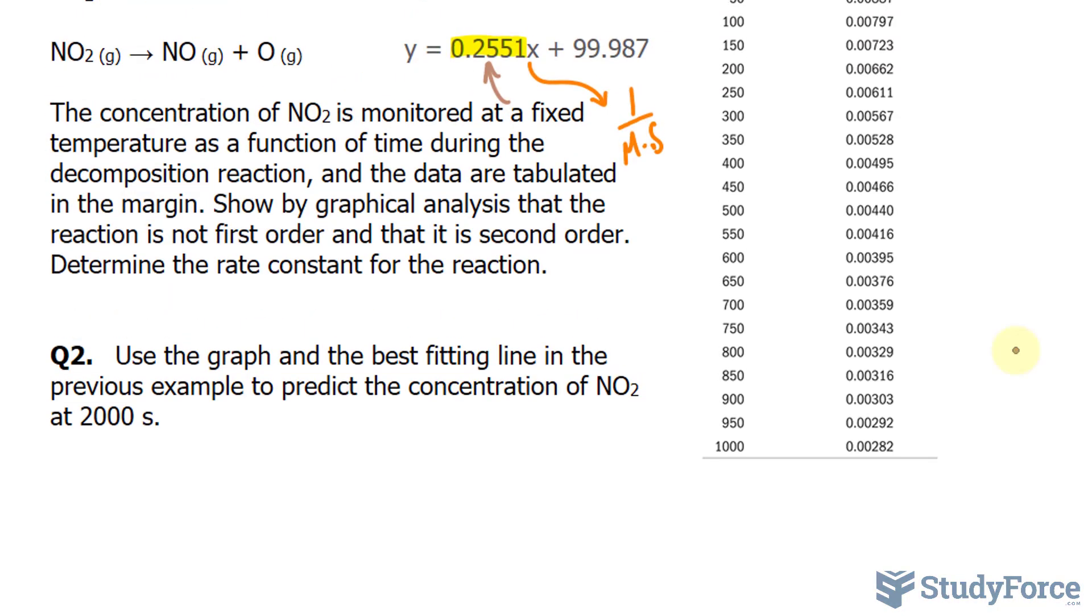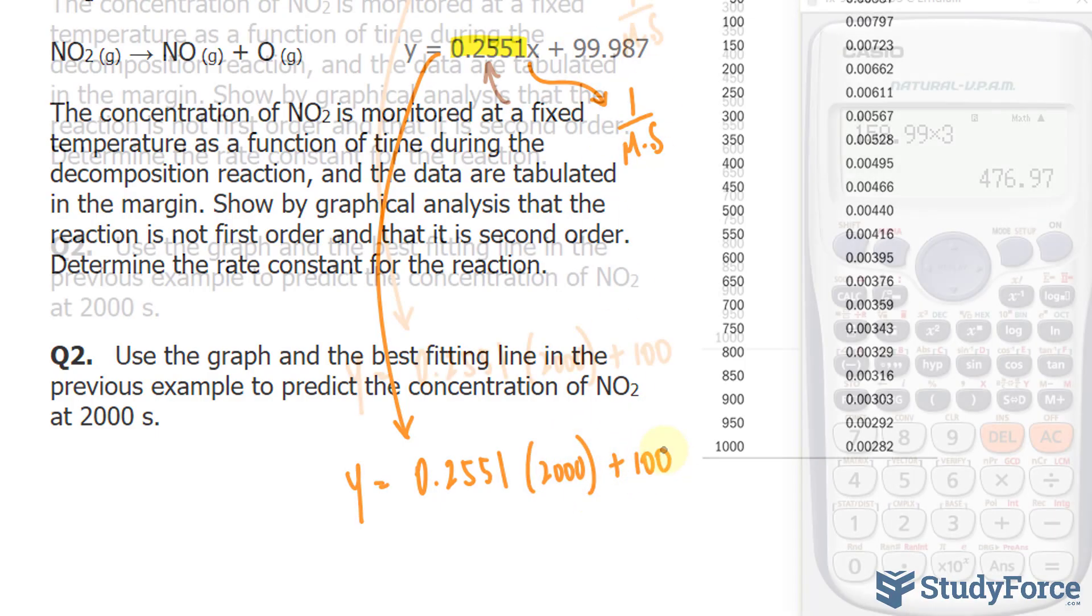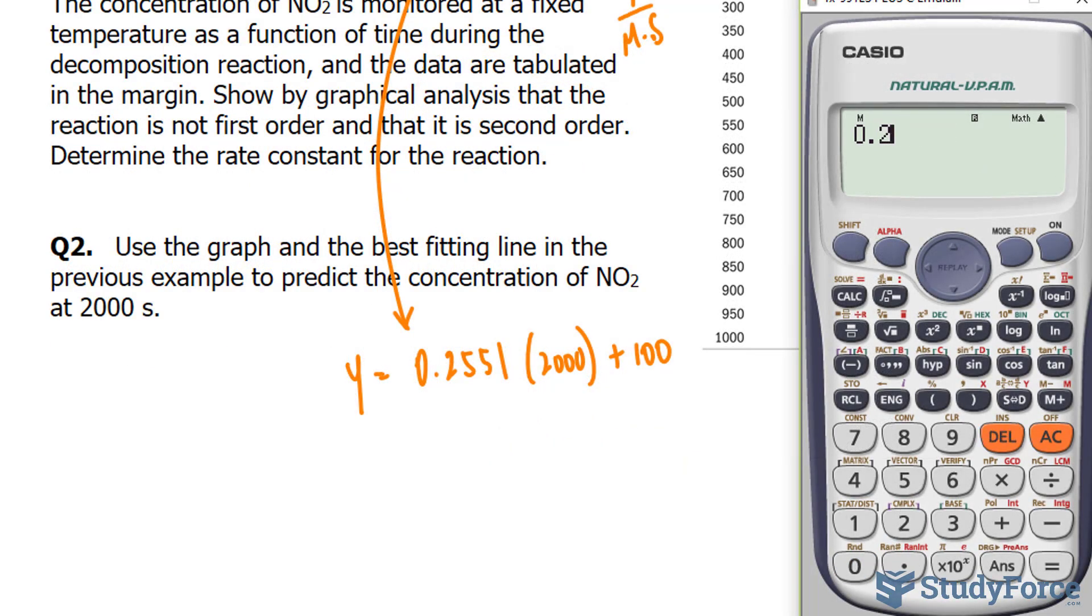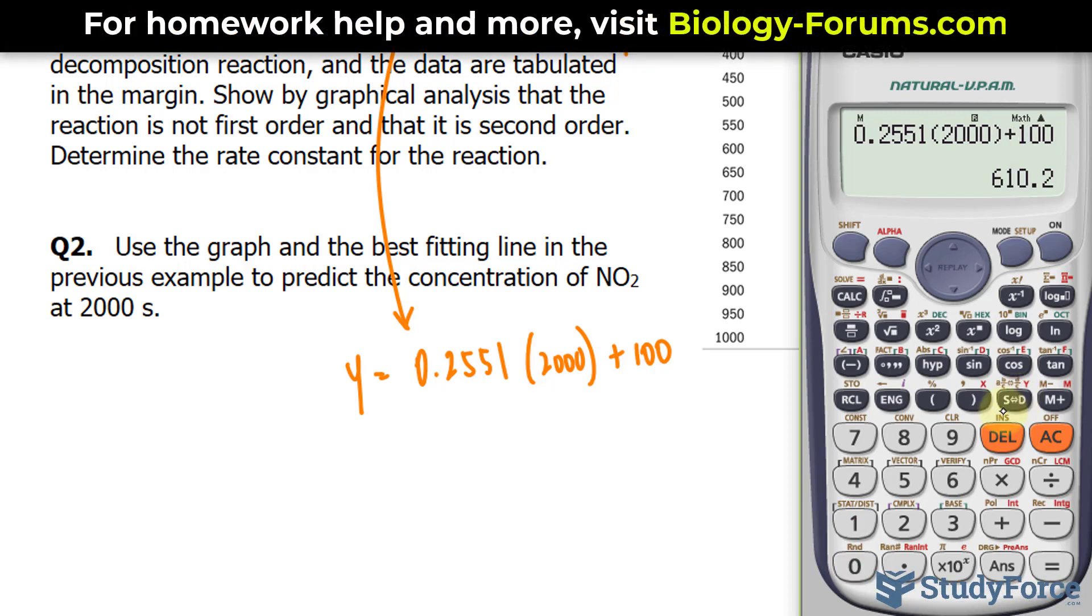We can, of course, use the graph and extrapolate that information, but we can also use this information, where I set x as 2,000. 0.2551 times 2,000 plus, let's just approximate that to 100. Let's find y. 0.2551 times 2,000 plus 100 gives us 610.2.